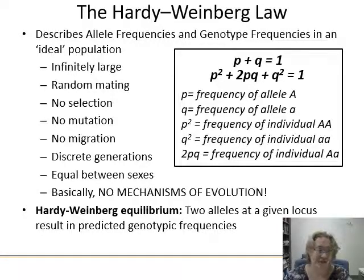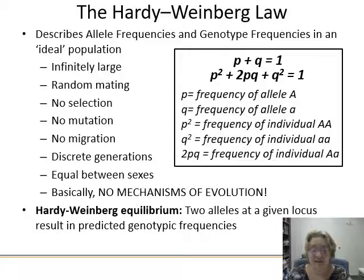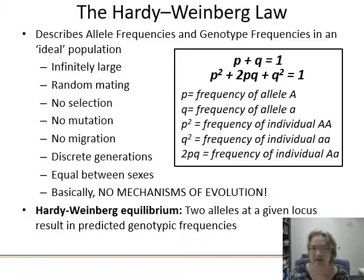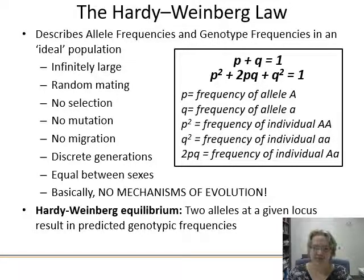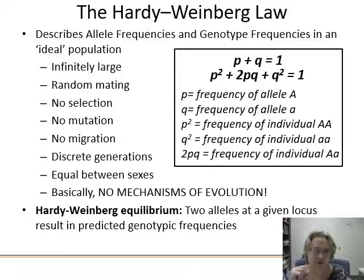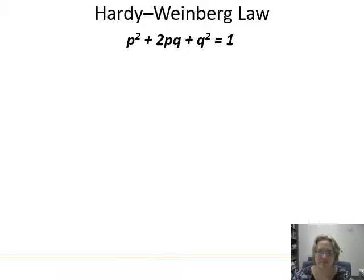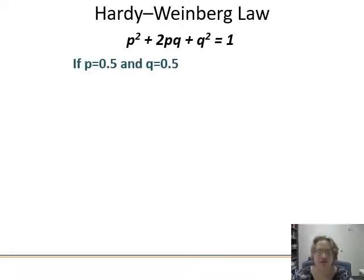For Hardy-Weinberg to work properly, the population has to be infinitely large, with random mating, no selection, no mutation, no migration, discrete generations, no overlapping, and equal breeding between the sexes. Basically, if no mechanisms of evolution are going on, there won't be a big deviation — your allele frequencies, when you plug them into the genotype equation, will match what you found, or be only slightly off. This doesn't mean if nothing's happening at one gene that the population isn't evolving — you'd have to look at many genes and loci.